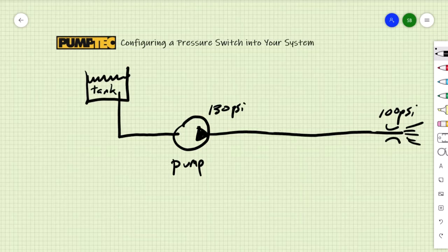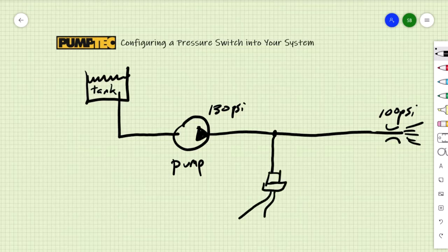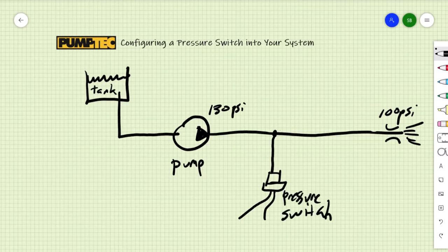Then if you install a pressure switch in the line, which is typically near the pump, you will need the pressure switch to activate at a higher pressure than the pump is seeing. So in this case, something like 150 psi.